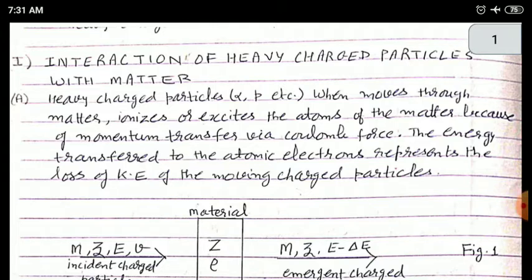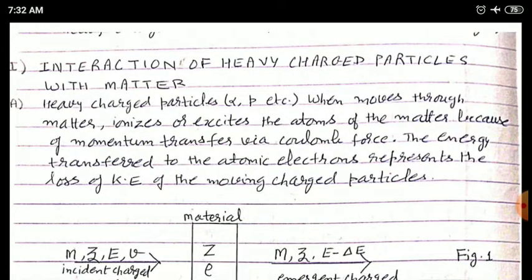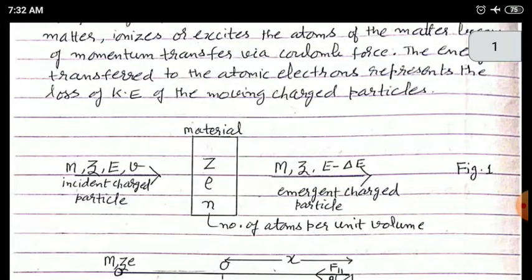In the chapter on interaction of charged particles with matter, let us start with the first case in which we will study how heavy charged particles interact with matter. When a heavy charged particle passes through matter, it ionizes or excites the atoms of the material because of momentum transfer via Coulomb force. The energy transferred to the atomic electrons represents the loss of kinetic energy of the moving charged particle.